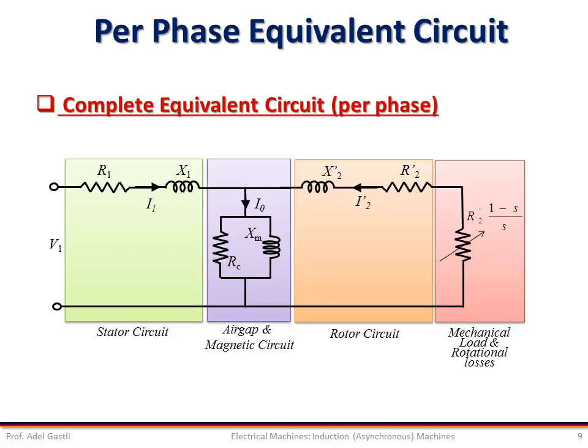For instance, if the stator winding is star-connected, since V1 in this circuit represents the phase voltage, the actual motor terminal voltage is √3 × V1. Also, the total torque is three times the per-phase torque, and the total power is three times the per-phase power.